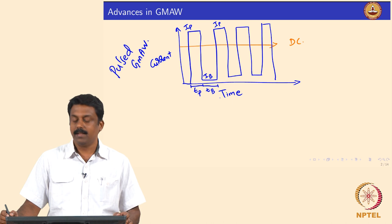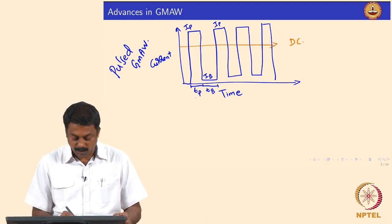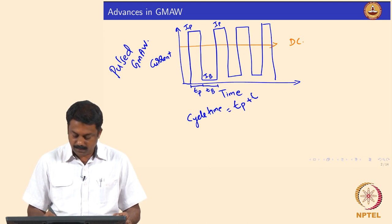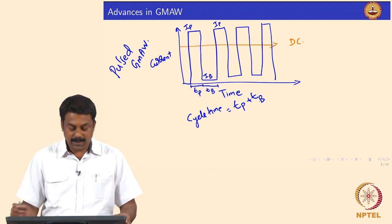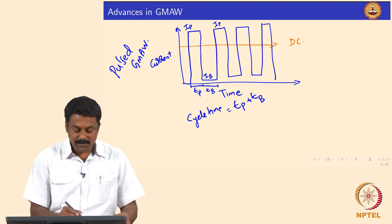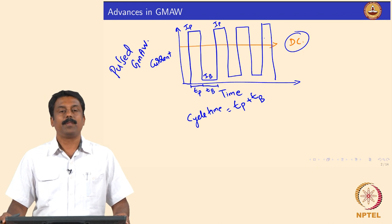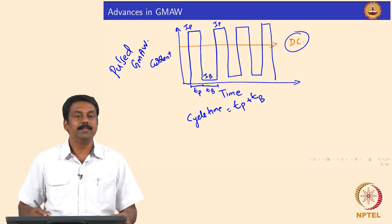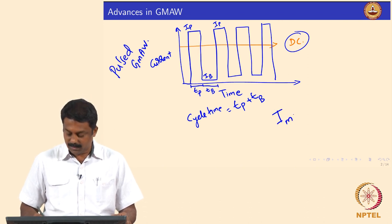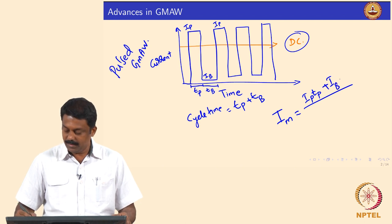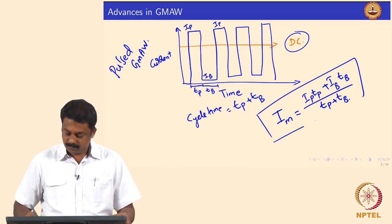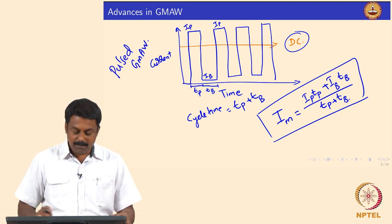The advantage is that if you take an average current over one cycle — where one cycle time is TP plus TB — the average current will be much lower than the current used in the constant current case. The average mean current I_mean is calculated as: (IP × TP + IB × TB) / (TP + TB). So the average current I_mean is much lower than what you use in the constant current case.